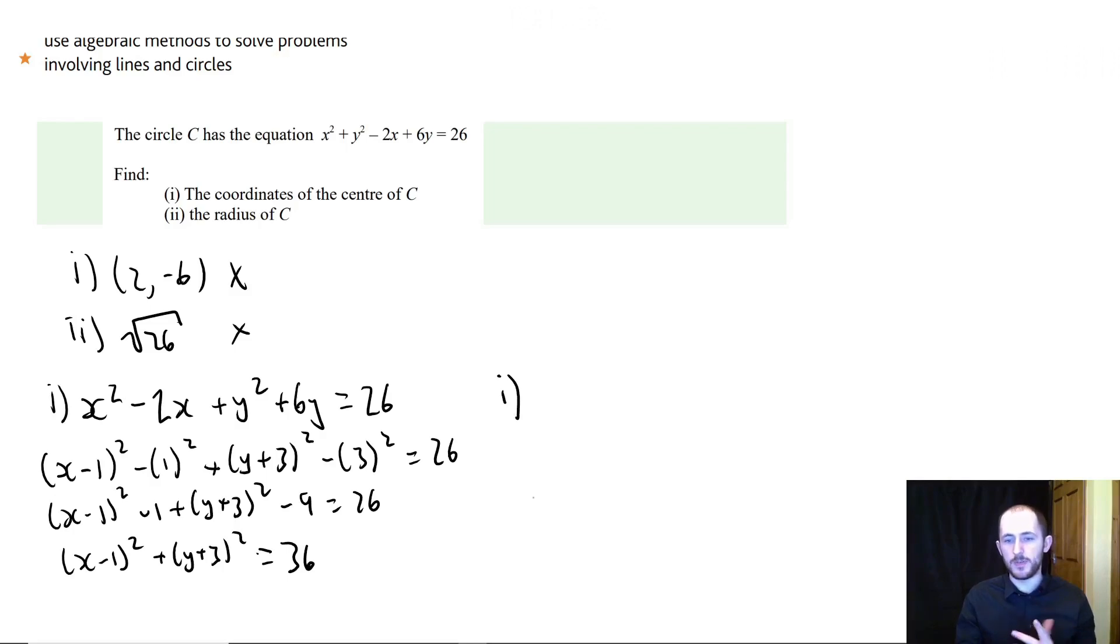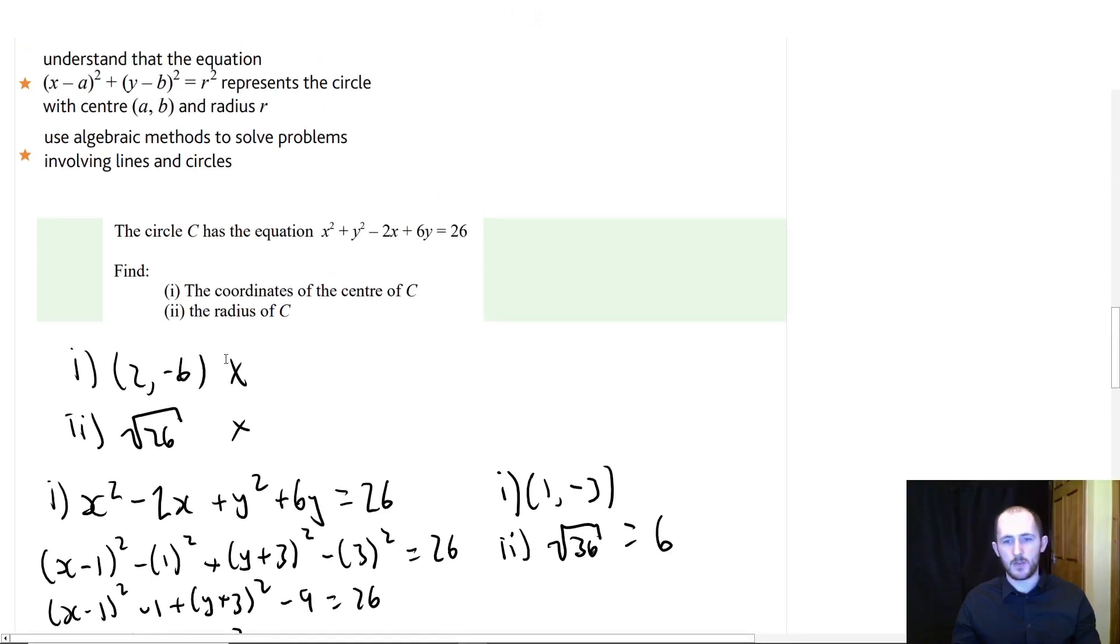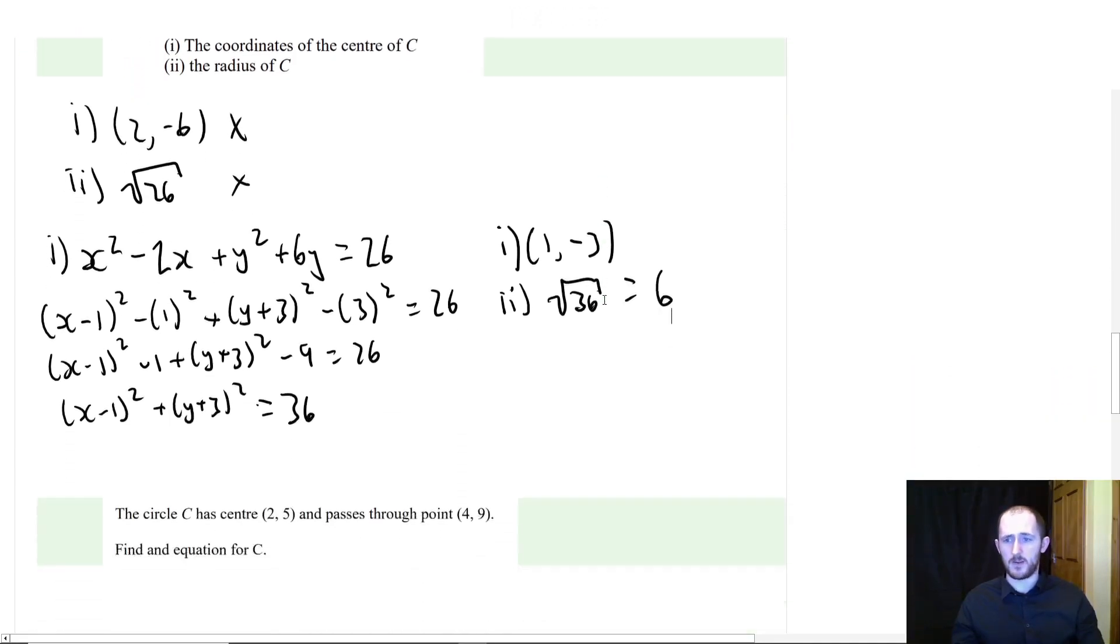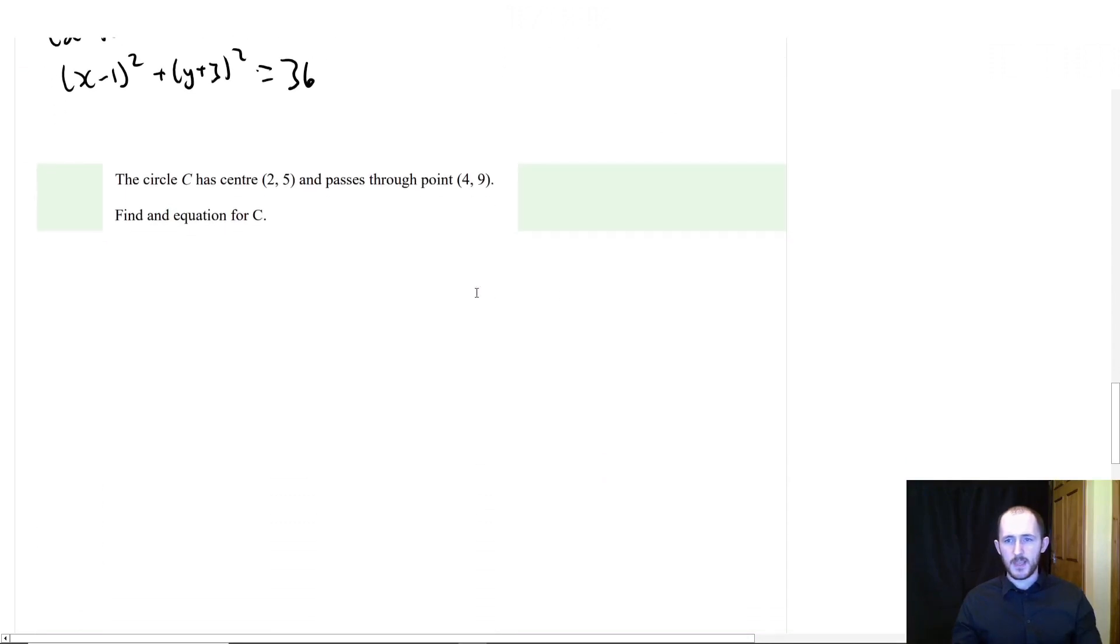So for part i, the center, all you need to do is flip the sign of whatever's inside the bracket. So the x coordinate is plus 1 instead of minus 1, and the y coordinate is minus 3 instead of plus 3. And then part 2, all you need to do is take the square root of 36. And because it's a radius, and radii have to be positive because you can't have a negative radius circle, it's just going to be the positive version, which is 6. And that's how you do that. So that's what it means by using algebraic methods.